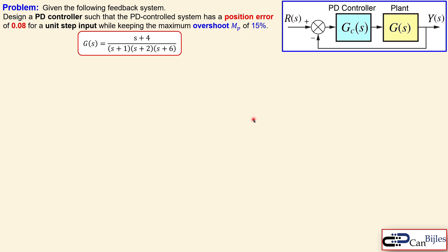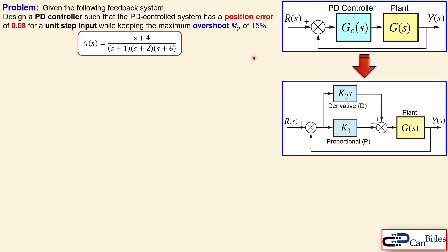Before we move on, let's discuss what the PD controller is. The controller transfer function Gc is composed of two parts in parallel: the proportional part and the derivative part. The k1 is the proportional controller gain and k2 is the derivative gain, and together they make the PD controller.